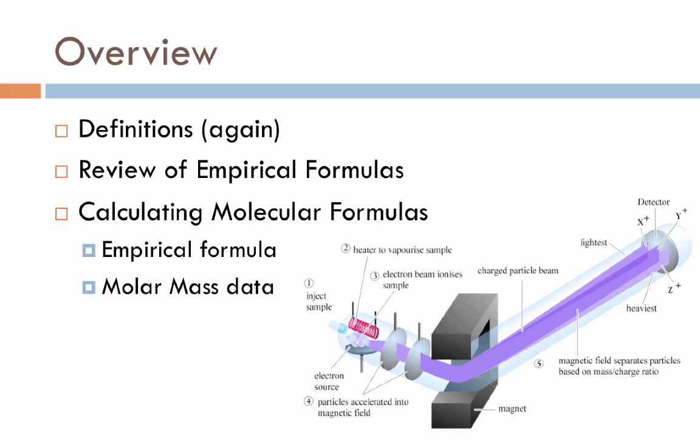We'll do a little bit of a review of empirical formulas and where they come from. We'll talk about the mathematics very quickly that lead up to creating an empirical formula. And then most importantly, we'll focus today on actually calculating the molecular formula of your compound, coming from the empirical formula itself and from molar mass data that we'll be collecting from a device such as this one right here, which is known as a mass spectrometer.